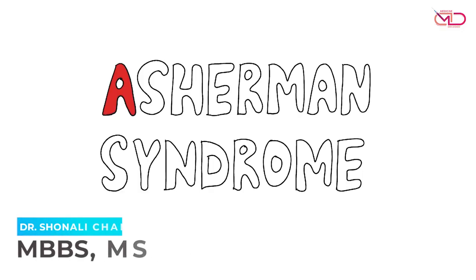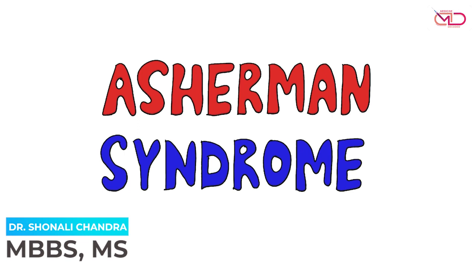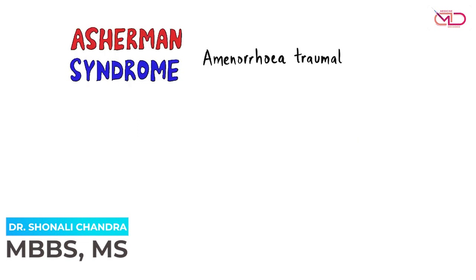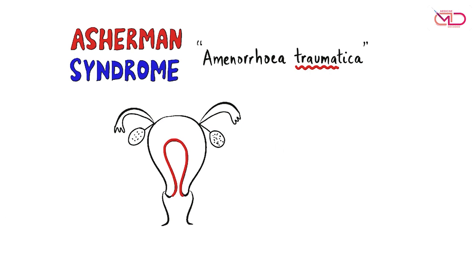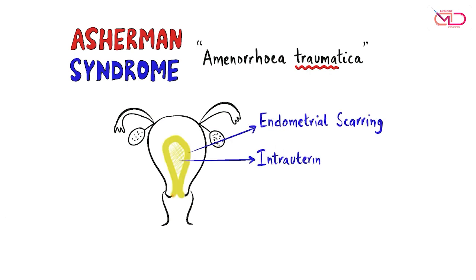What is Asherman syndrome? Also called Amenorrhea Traumatica, it describes a condition where, because of trauma, the endometrial lining is replaced by scar tissue and varying degrees of intrauterine adhesions are formed.